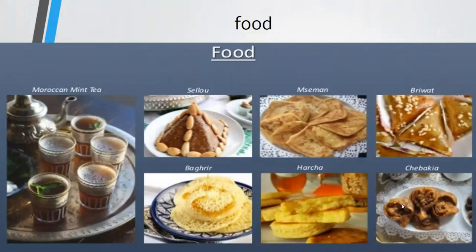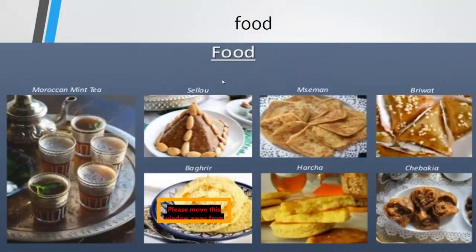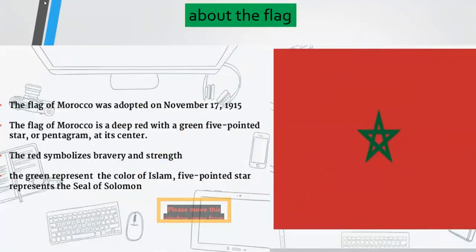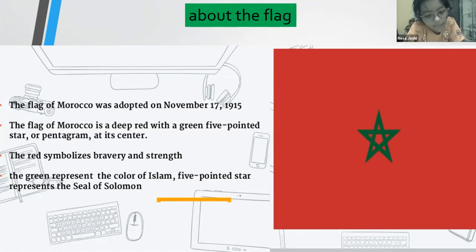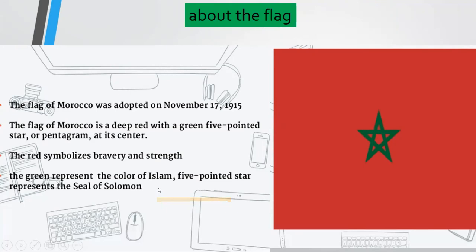Here are different types of foods they eat in Morocco. The flag of Morocco was adopted on November 17th, 1915. The flag of Morocco is a deep red with a green five-pointed star at its center. The red symbolizes bravery and strength, and the green represents the color of Islam. The five-pointed star represents the seal of Solomon.